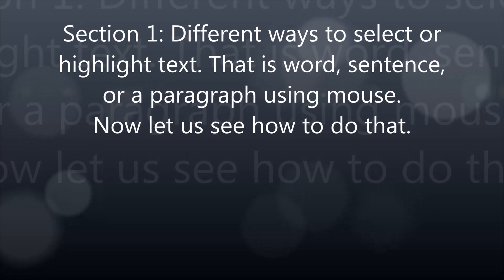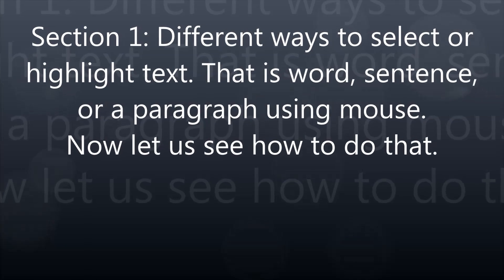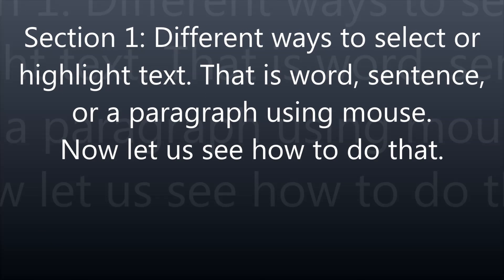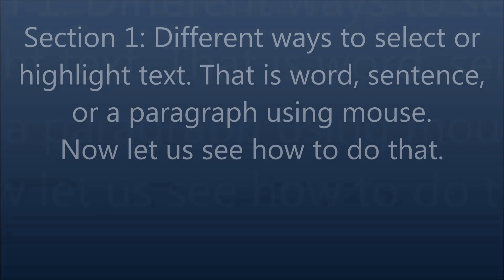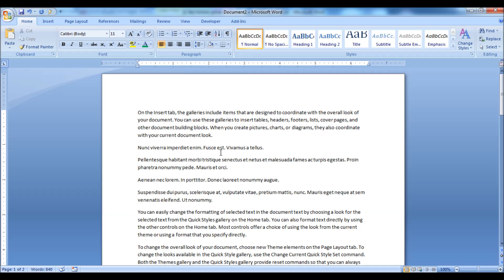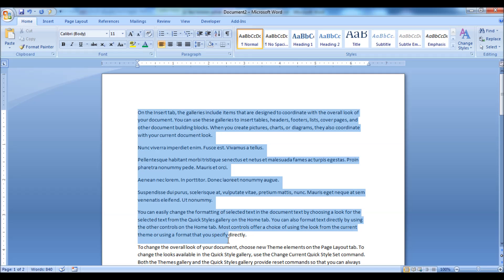Section 1: Different ways to select or highlight text — that is a word, sentence, or a paragraph — using the mouse. Usually, you may click and drag over the text to highlight or select it. There are a couple of other ways you can use to speed up your selection process.